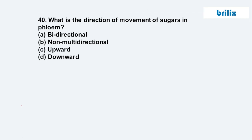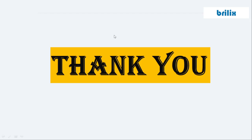Question 40: What is the direction of movement of sugar in phloem? Sugar is formed in the leaf and needs to be transported both upward and downward, so it is bi-directional — option A. This completes DPP NEET 2020 Set 2 on Transport in Plants. Comment your score below, and thanks a lot — see you in the next session!